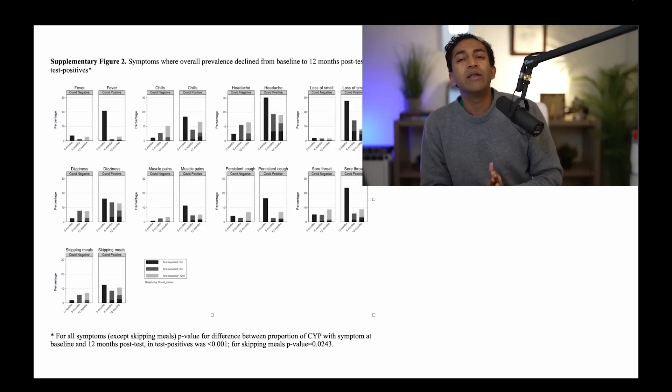The next slide. There are a number of symptoms where the overall prevalence declined from baseline to 12 months in test positives. Fever, of course. They all had it at baseline, it all got better. Chills, headache, loss of smell. This is important. Loss of smell.